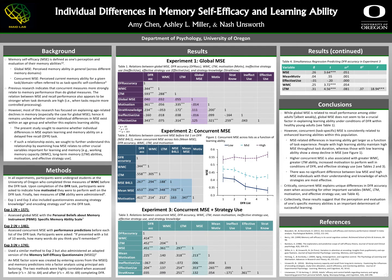Since Experiment 1 revealed Global MSE did not influence memory performance in young adults, we sought to examine these relations with Concurrent MSE. Table 2 shows moderate to large correlations between MSE and recall accuracy. Figure 1 demonstrates that the relationship between MSE and recall accuracy gets stronger as a function of task experience. People with high learning ability maintain high MSE throughout the task, whereas people with low learning ability decline in MSE. Table 2 further reveals people with high Concurrent MSE also tend to have higher working memory capacity, higher long-term memory ability, and are more motivated.